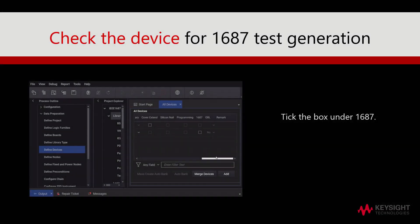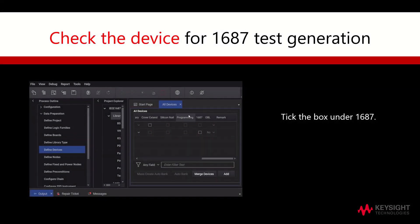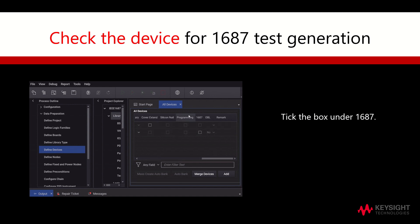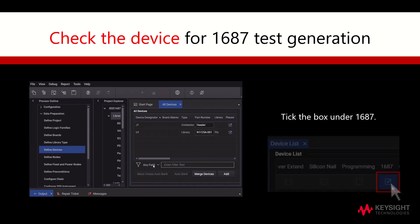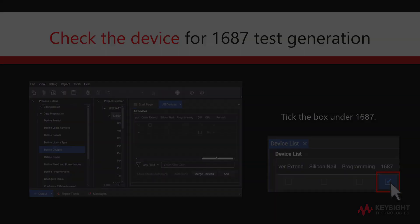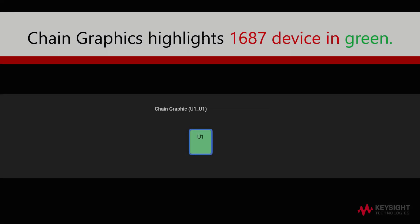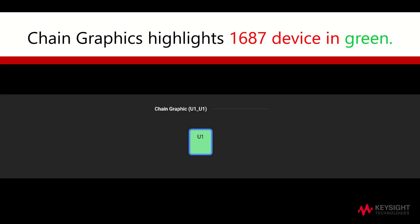Moving forward, we will check the device for 1687 test generation by ticking the box under 1687. It is noted that the chain graphics will highlight the 1687 device in green as shown.